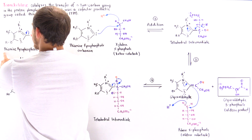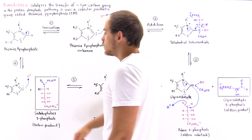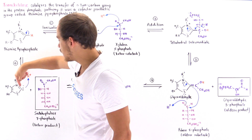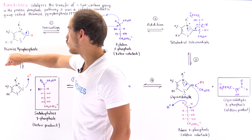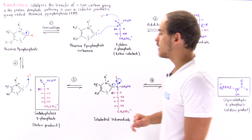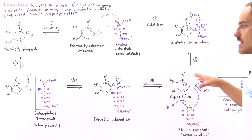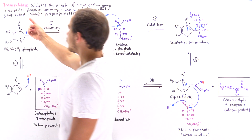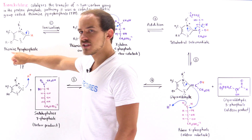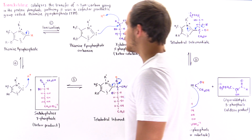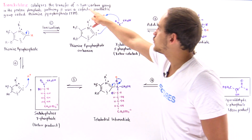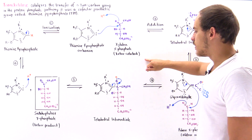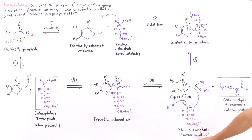In the final step, we reform the initial thiamine pyrophosphate in its protonated form: the H atom that was kicked off is picked up by the carbon atom to regenerate the protonated TPP molecule. In this six-step process, transketolase uses TPP to transfer a two-carbon group from xylulose-5-phosphate, the ketose substrate, to ribose-5-phosphate, the aldose substrate.